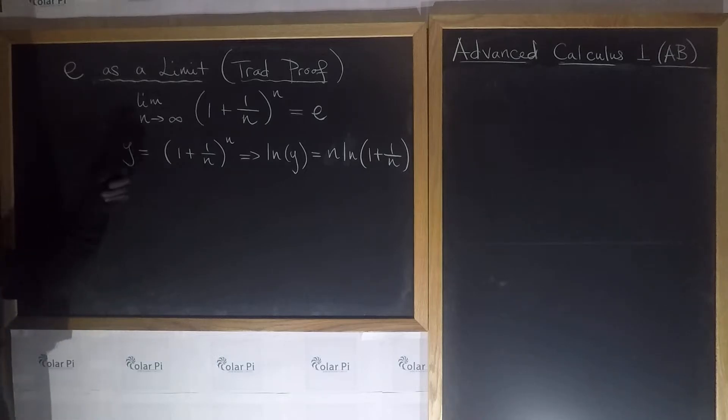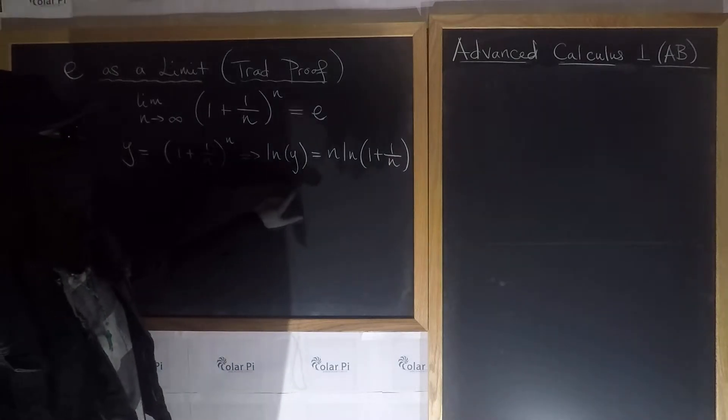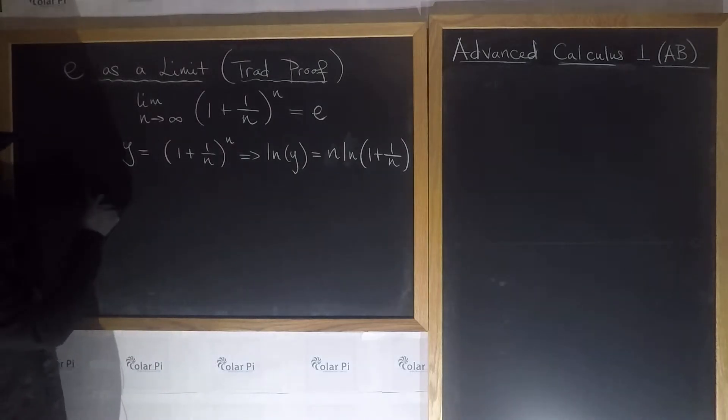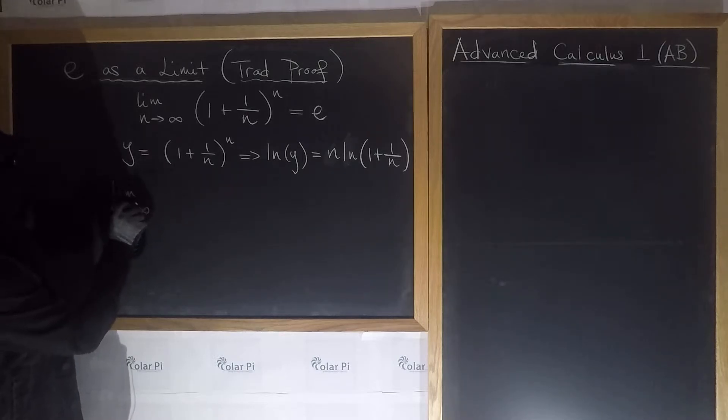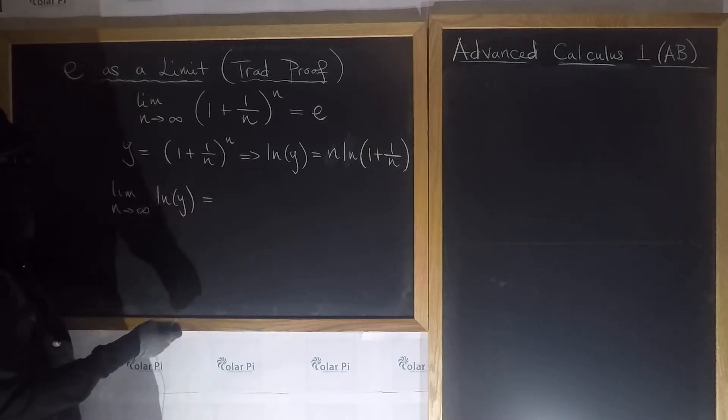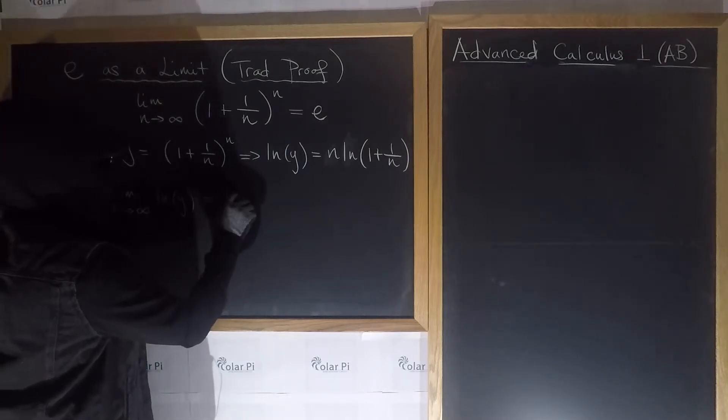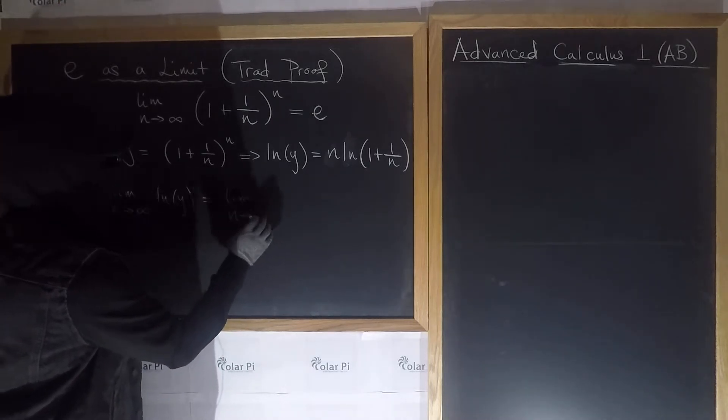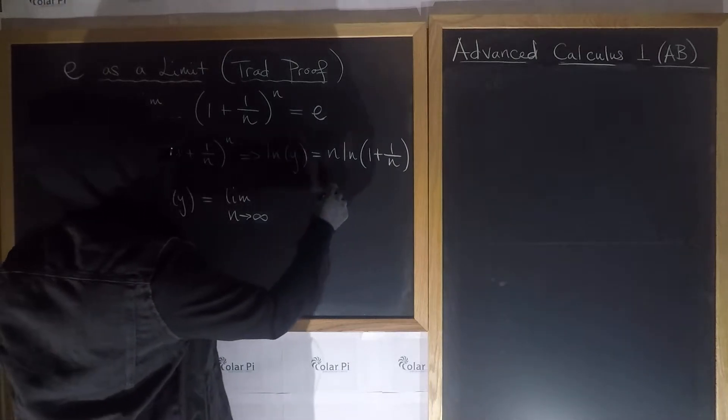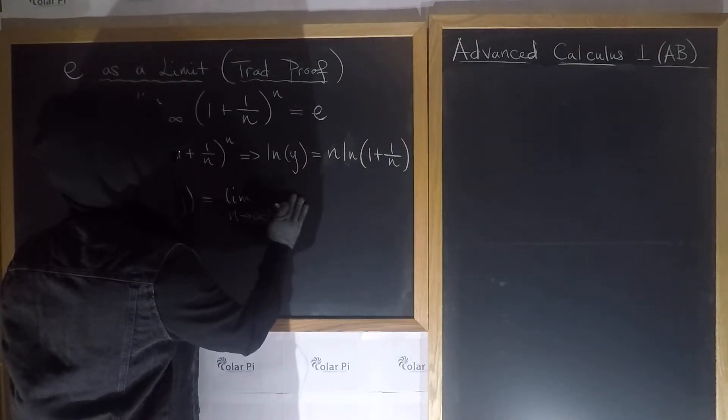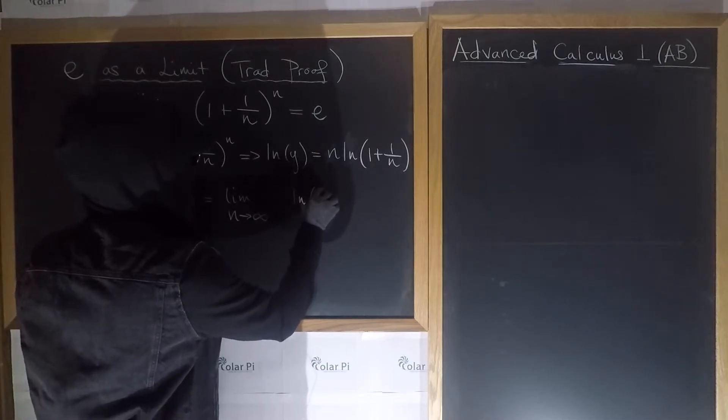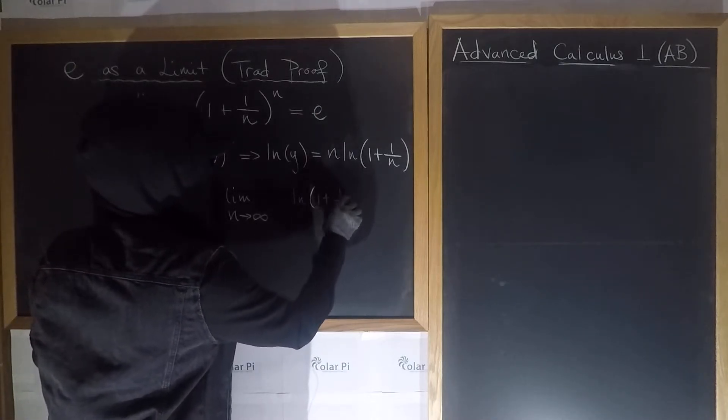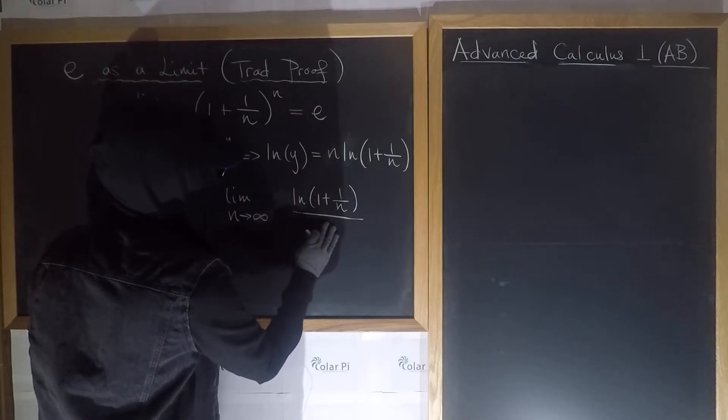Now remember y is this. Let's take the limit here, so we'll have lim as n goes to infinity of ln(y) is equal to lim as n goes to infinity of this here, which I'm going to write as ln(1 + 1/n) over (1/n). I'm allowed this, right? All I've done is show that multiplying by n is the same as dividing by 1/n, and it suits me to rewrite this in this fashion.